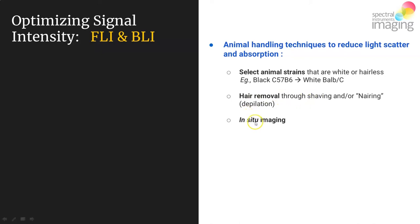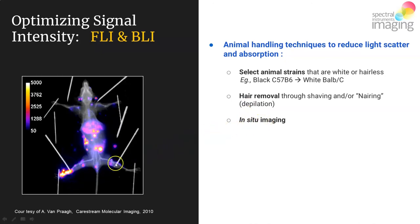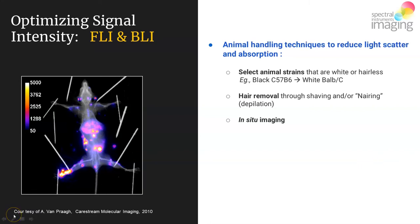Finally, you can do in-situ imaging if necessary — essentially pulling back the skin to see your light foci without the interference of epidermal and dermal skin attenuation. What we're looking at in this particular model is a viral footpad infection in which lymphocytes have been transduced to express luciferase and can be seen presenting at various peripheral lymph nodes around the mouse's body.